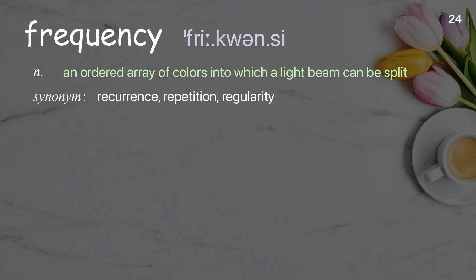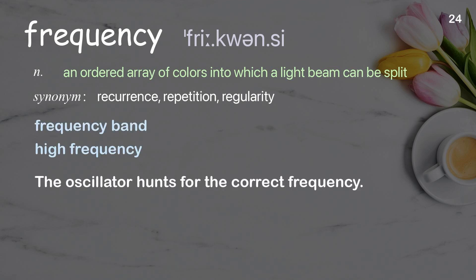Frequency: an ordered array of colors into which a light beam can be split. Examples: frequency band. The oscillator hunts for the correct frequency.